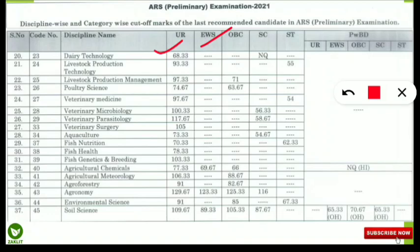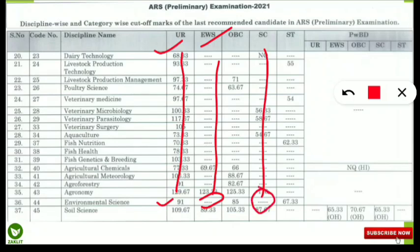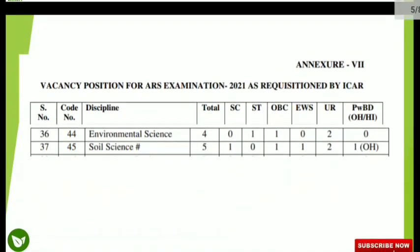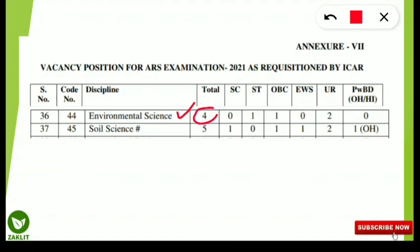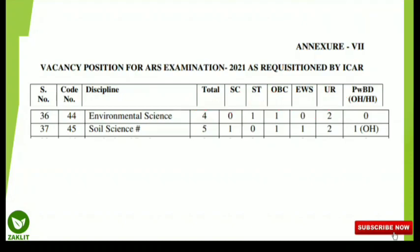For the unreserved category, 91 marks should be secured by the candidate to appear for the mains exam. For EWS and SC there are no cutoff marks listed for the mains exam. For ST candidates the qualifying marks is 67.33. The reason EWS and SC have no cutoff marks is that in the environmental science paper, there were a total of four seats for the Agriculture Research Service, and SC category had zero posts while EWS also had zero vacancies — seats only existed for unreserved, OBC, and ST.